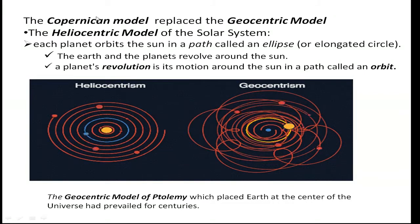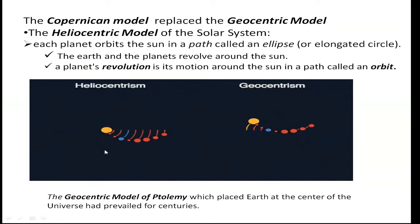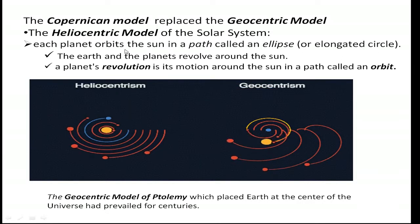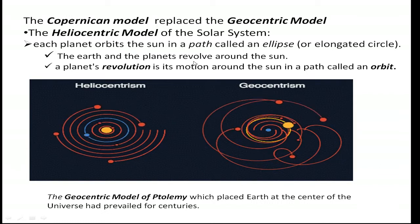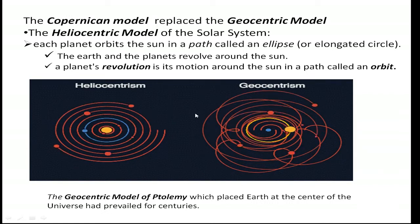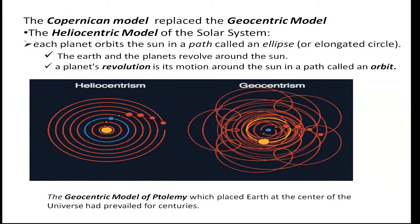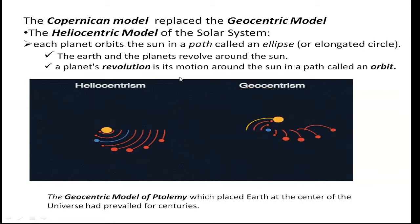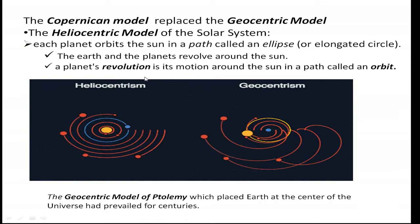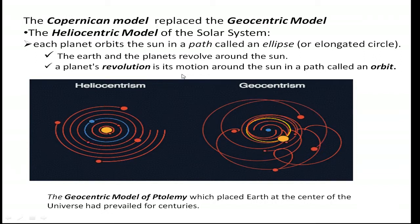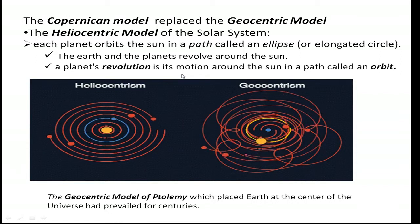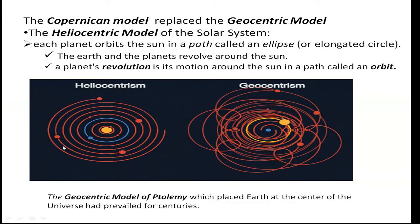Looking at the heliocentric model of the solar system, it looks a lot simpler. Each planet orbits the sun in a path called an ellipse, which is an elongated circle. The Earth and the planets revolve around the sun. A planet's revolution is its motion around the sun in a path called an orbit.